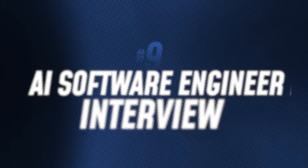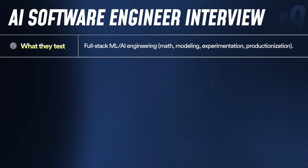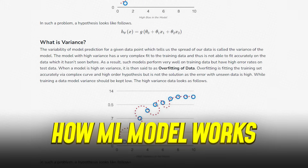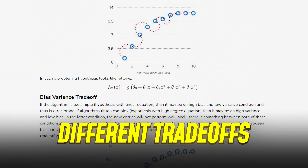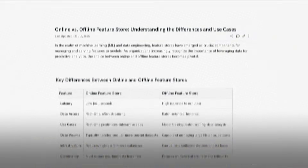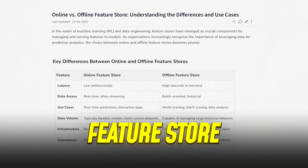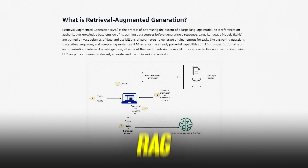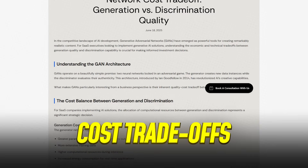The ninth and final type is the AI software engineer interview — a full-stack ML/AI engineering interview where you're expected to know maths, modelling, experimentation, and productionising ML models. You should know Python and data management, ML theory like bias-variance trade-offs and how models work, and ML system design topics such as offline versus online features, feature stores, training-serving skew, A/B testing, and model observability. You also need to know about LLMs and GenAI: tokenisation, prompting, RAG, agents, latency, costs, and the trade-offs involved.